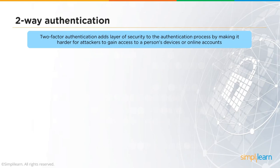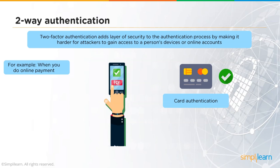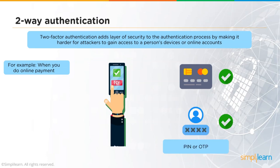Two-factor authentication adds a layer of security by making it harder for attackers to access accounts. For example, when making an online bank payment, after entering payment details you must authenticate with an OTP sent to your device. You type the OTP on the bank's website, and the transaction is authenticated. If the OTP is incorrect, the transaction is invalidated immediately.